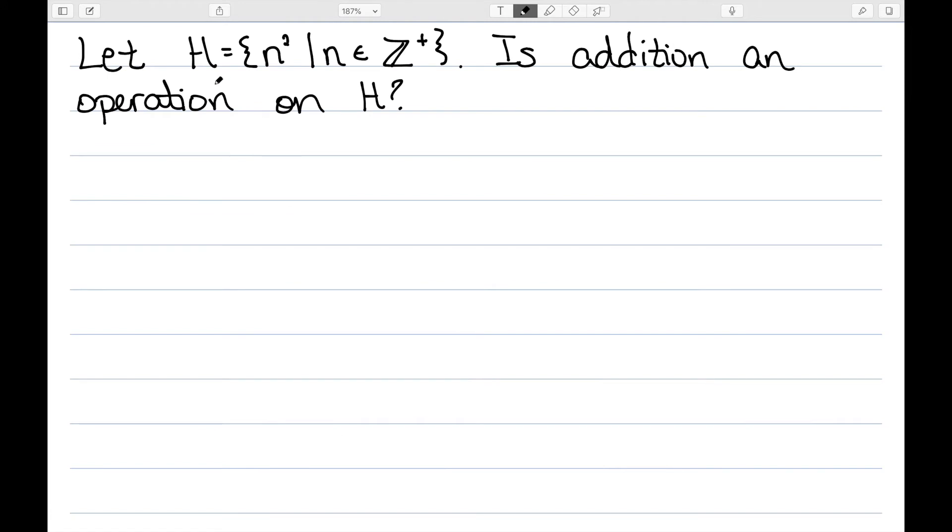Let's consider the set H, which is the set of all n squared such that n belongs to Z plus. So n needs to be a positive integer. And we're going to look at the set of all n squareds. And I want to know, is addition an operation on H? First, let's think through what H actually is. Well, it's the squares. So 1, 4, 9, 16, 25, 36, etc. So is addition an operation? Well, in this case, no.